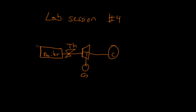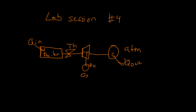At the boiler we're adding heat, so this is Q in. At the condenser the heat is dissipated, so this is Q out — it goes out to the atmosphere. And this is where our power is generated. I think this is our basic sketch for the system.